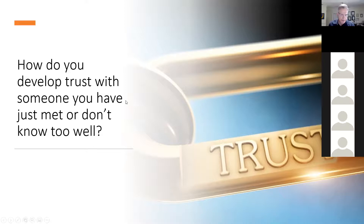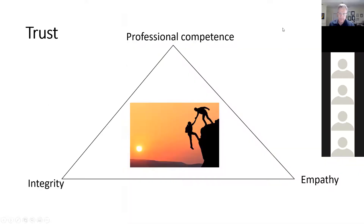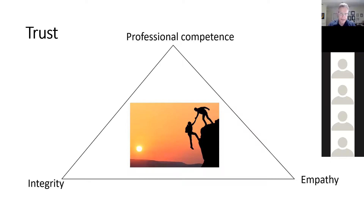Let me give you a model that distills trust down into three areas. Starting at the top of the pyramid: technical capability. If you don't have it you probably wouldn't have a job, but it is important — people want to know you're good at what you do. It'll be fairly obvious from the work you do for them. But if that's the only thing, there's a problem, because integrity is about saying what you mean and meaning what you say — your words must match your behavior.